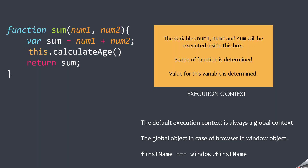So for every function call, a new execution context gets created. And inside that execution context, the variables are stored and a piece of JavaScript code gets executed. The default execution context is always the global execution context. So whenever you run your program, all the global variables and global functions get stored in the global execution context.